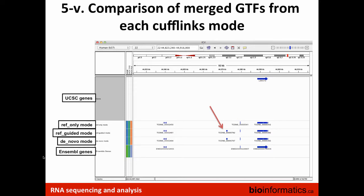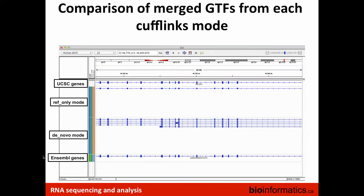We're going to do a comparison of merged GTFs from each cufflinks mode and look for subtle differences in what transcripts are predicted in each mode. In the reference-only mode we get one transcript summarized; in the de novo mode we get a bunch of different transcripts predicted with a lot of similarities but little differences — cufflinks predicting a transcript that starts at a different location, or predicting a transcript that retains a small intron instead of having that intron removed like the other transcripts.